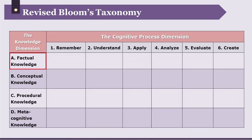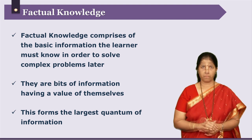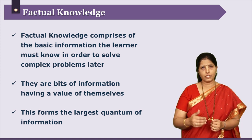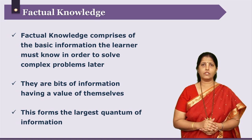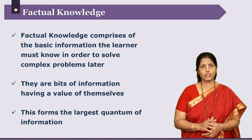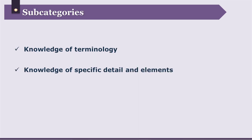Now let us take a look at the knowledge dimension — specifically factual knowledge. Factual knowledge comprises the largest base of information that learners would learn. It is a basic knowledge that learners must have so that they are able to apply it later while achieving higher learning objectives. Factual knowledge has its own meaning, its own existence, and its own importance — it is bits of information that have value in themselves. There are two subtypes: knowledge of terminology and knowledge of specific details and elements.